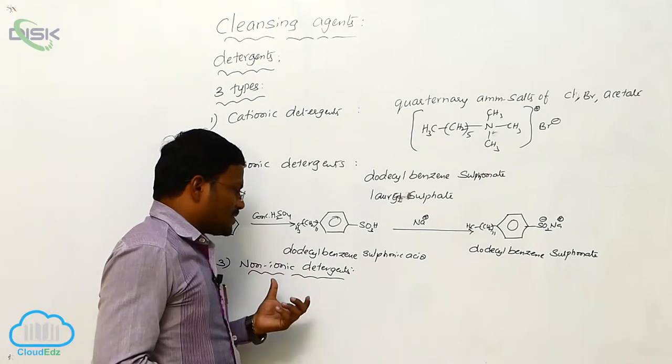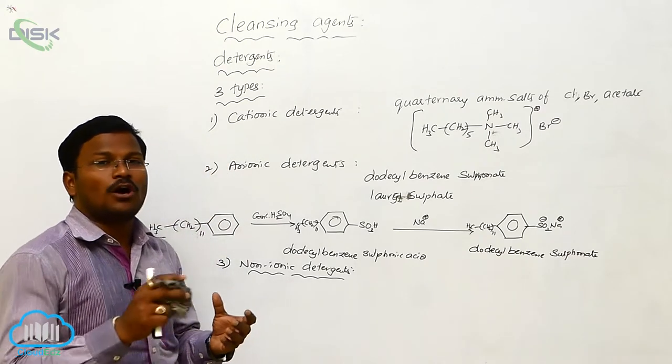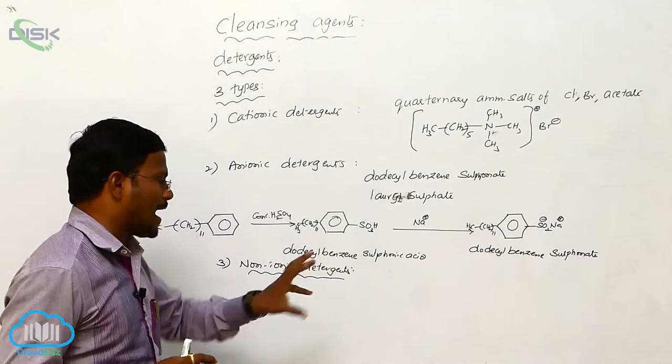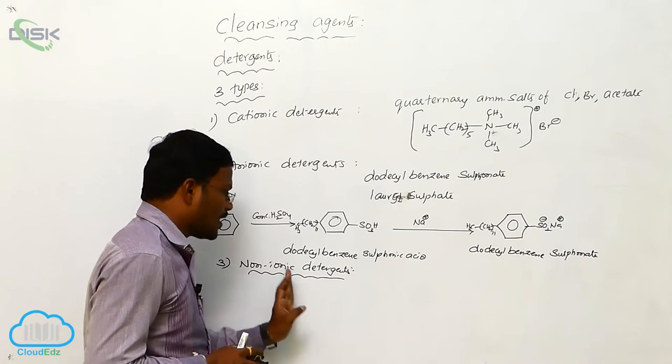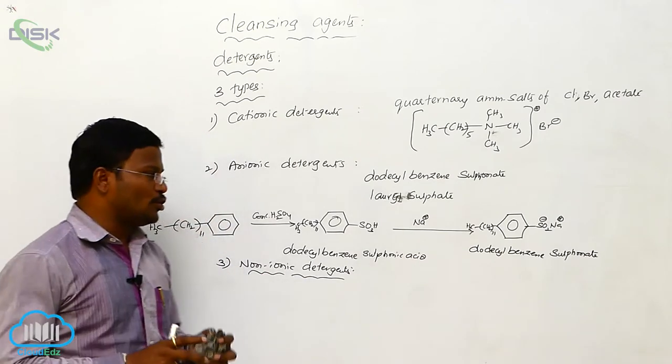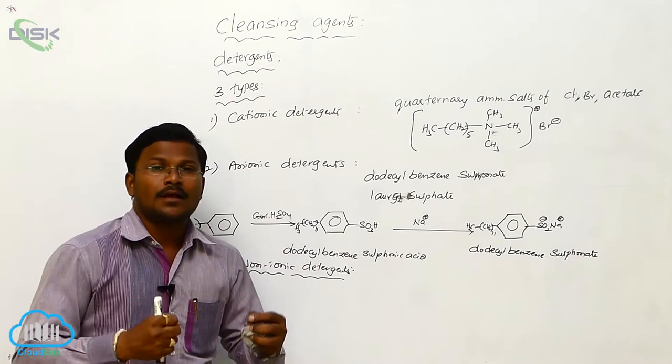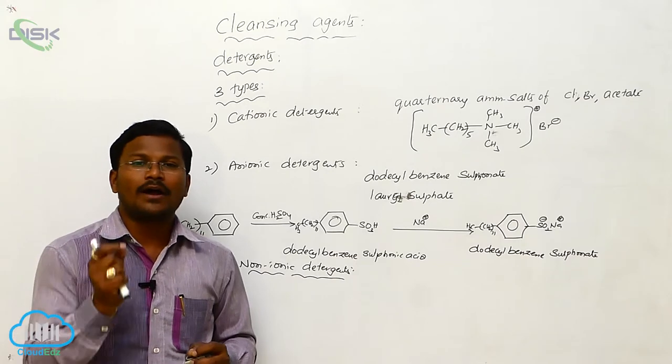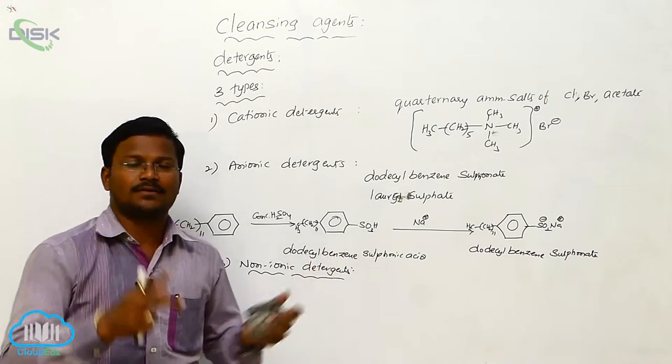The non-ionic detergents are generally used in liquid dishwash soaps or liquid dishwash chemicals. As in the form of liquid dishwash chemicals, we have to use non-ionic detergents. Due to consist of a long hydrocarbon chain, they can easily eliminate grease and oil from the fiber by the formation of micelles.